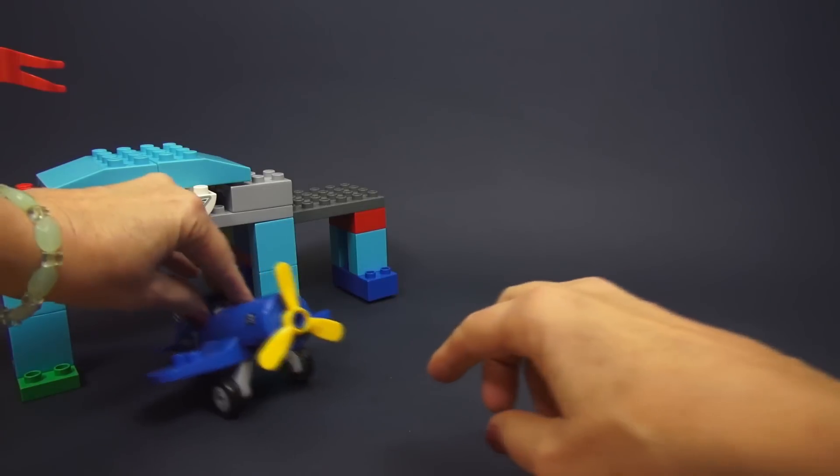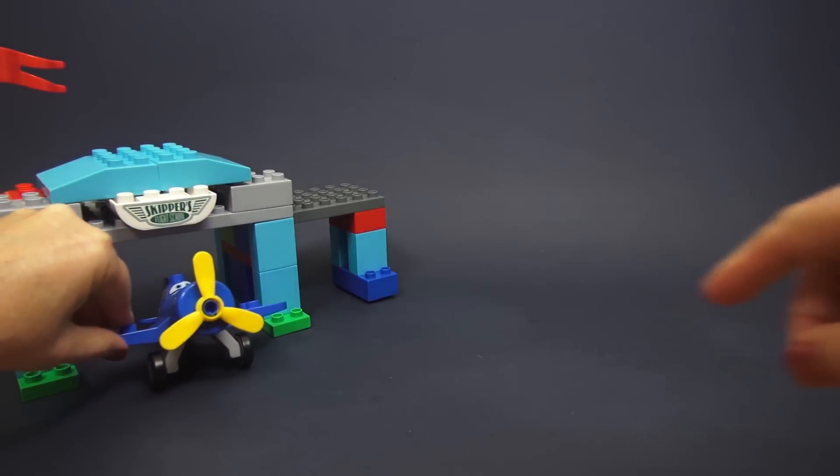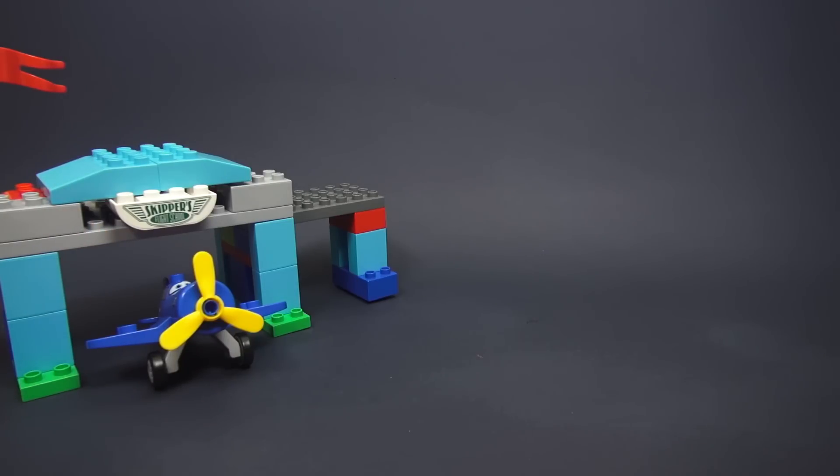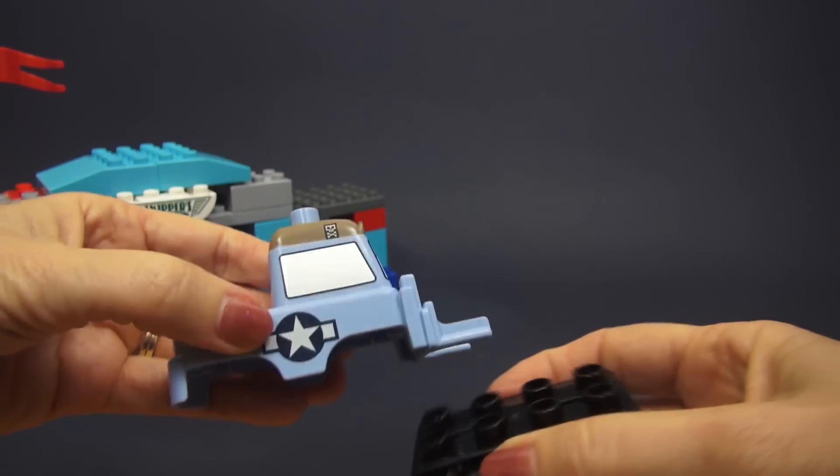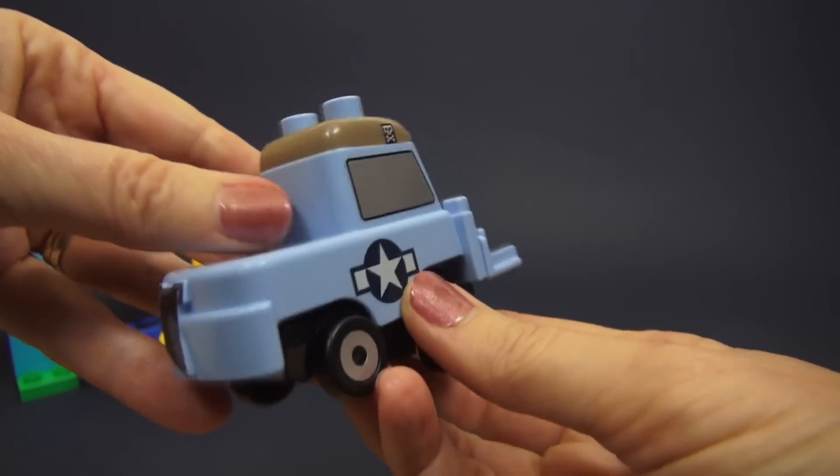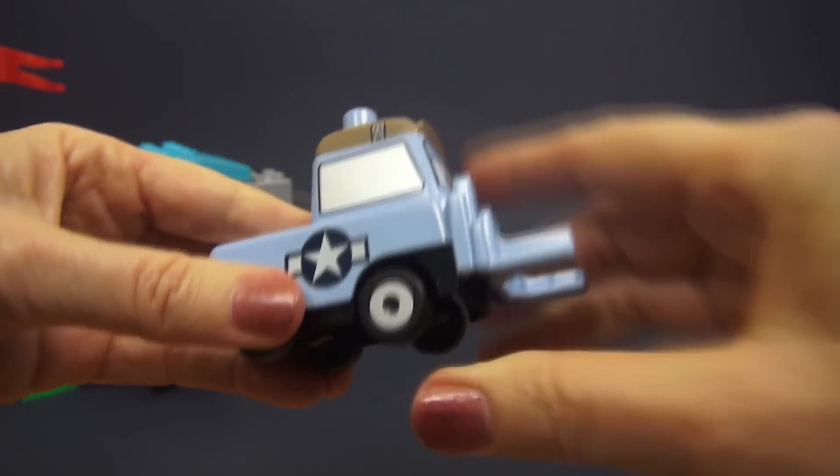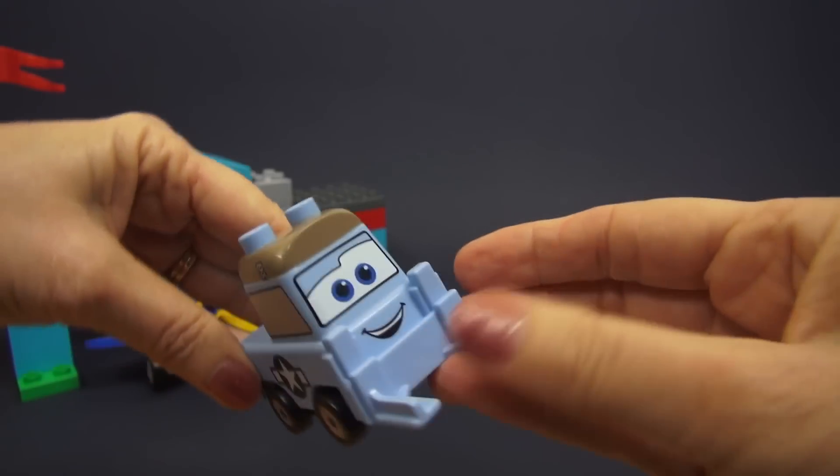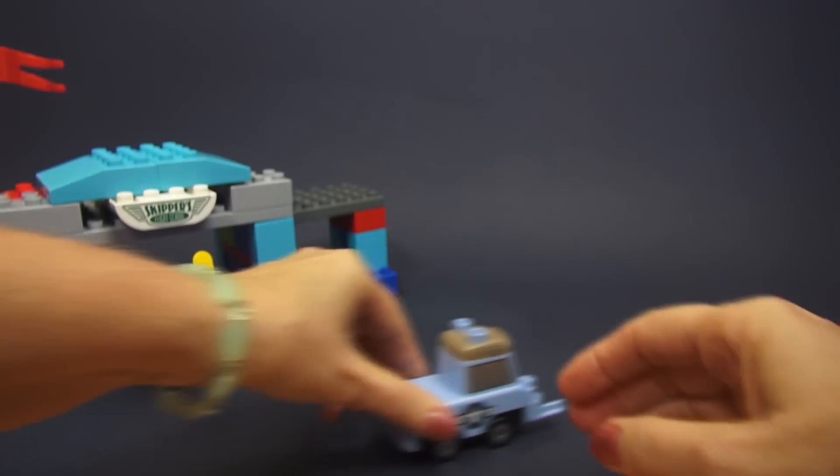Then he needs some wheels, there we go, snap right in there. Now he's got a propeller that works and you can wheel him if you want to. Now let's meet his trusty assistant Sparky and what Sparky needs so that he can help Skipper around the hangar is a set of wheels. So those go right like that, very easy. He's a little forklift.